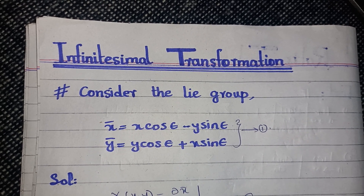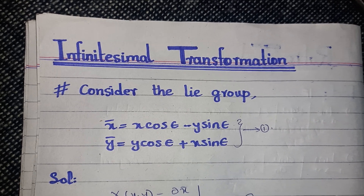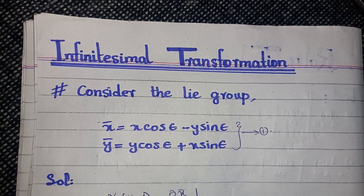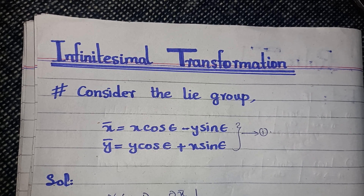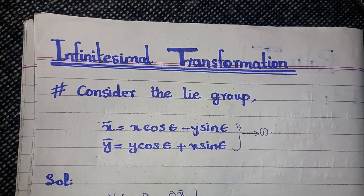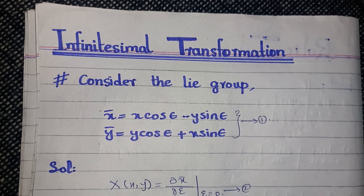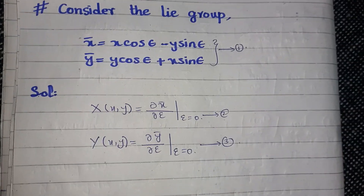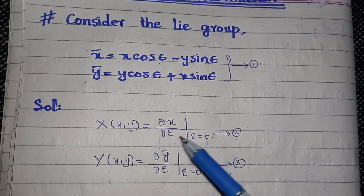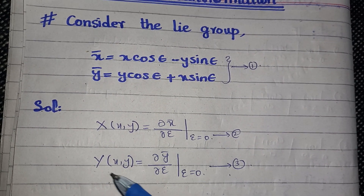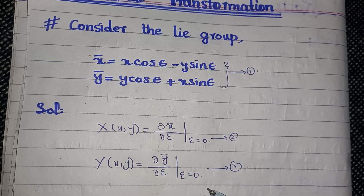In my previous lecture I explained how we can find the infinitesimal transformations using the generalized form of a Lie group. Since we are working with ordinary differential equations, we have two formulas for finding the infinitesimal transformations, given in equations 2 and 3: we can find capital X and capital Y by taking the partial derivative of x-bar and y-bar with respect to epsilon, evaluated at epsilon equal to zero.